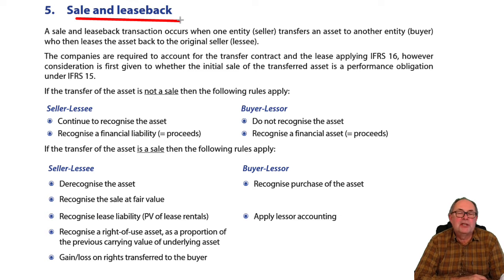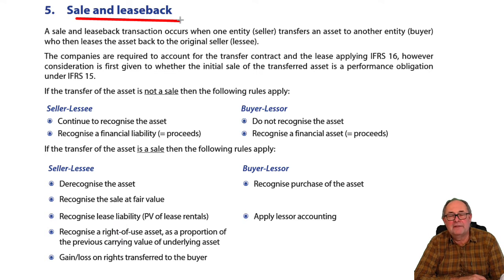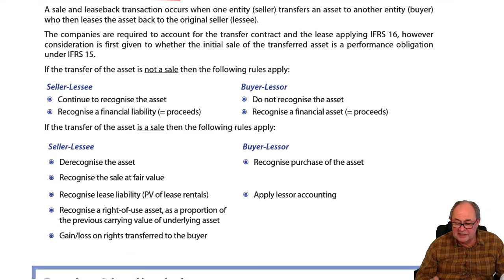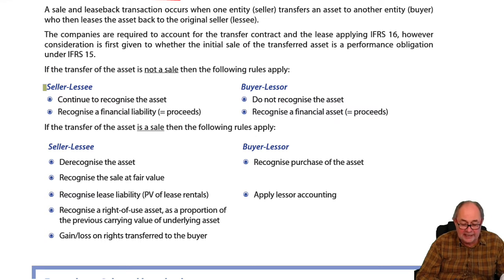In this situation, I own a football stadium. Perhaps the football stadium has a life of 40 years. I sell it and then rent it back for 40 years, or I sell it and rent it back for 5 years. The first thing you have to consider is: was there a sale, or is it simply a secured loan? You'll notice there are two sets of rules when we consider sale and leaseback. The first stage is to decide: was there actually a sale or not?